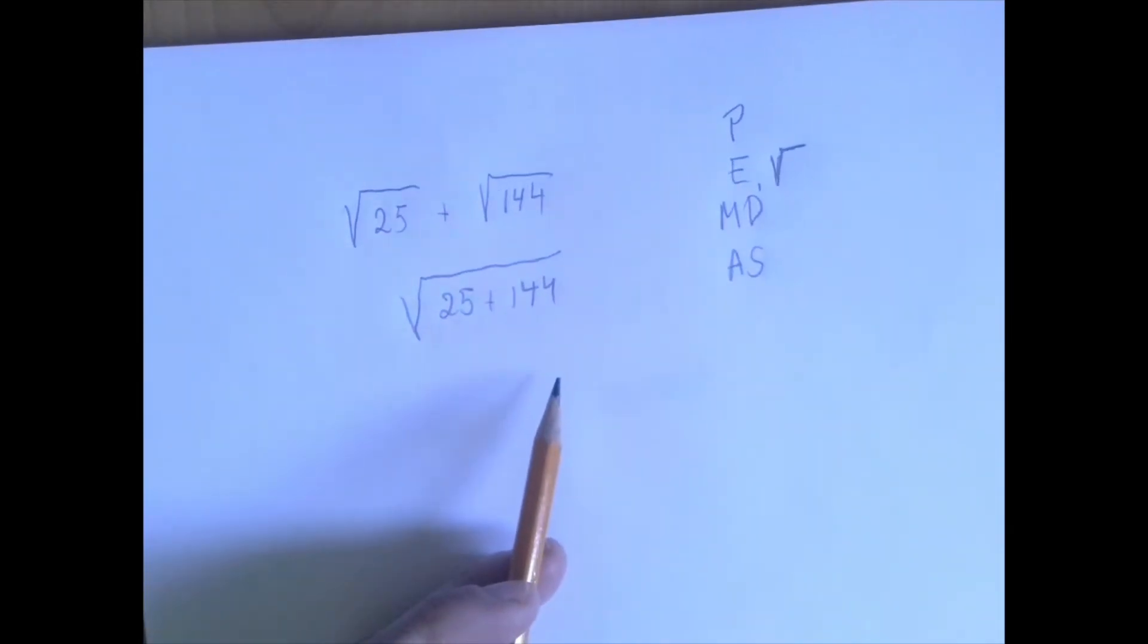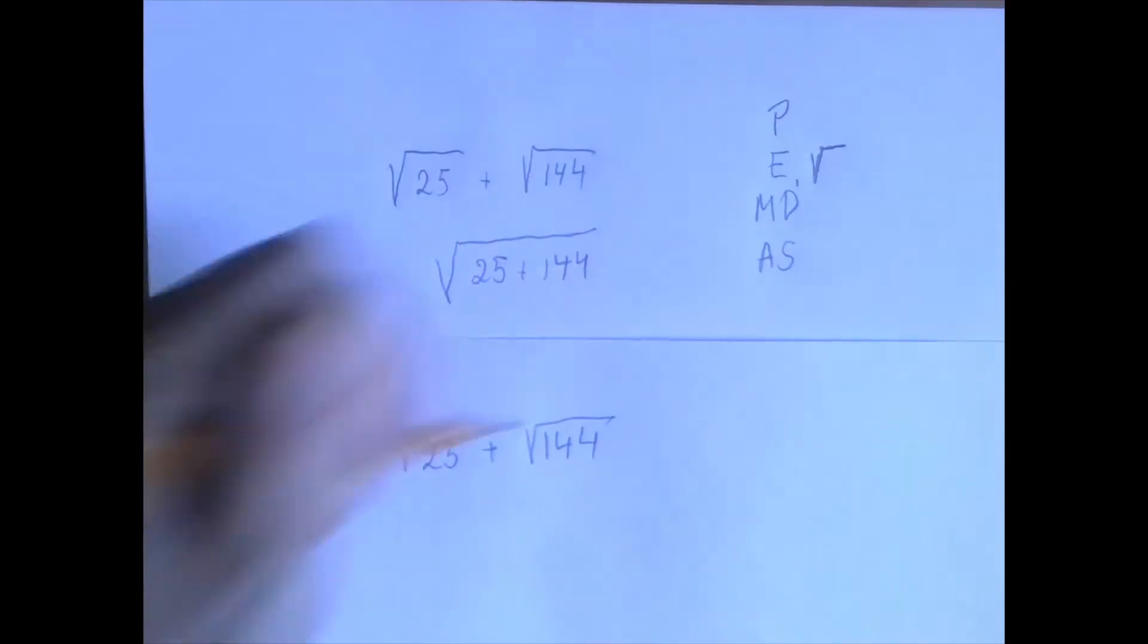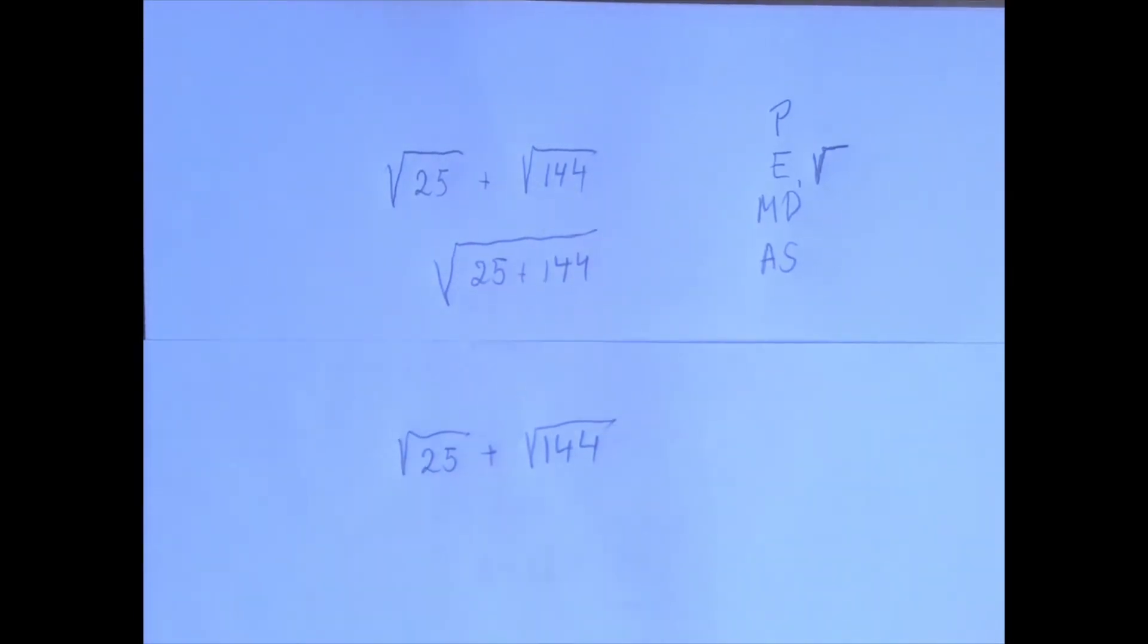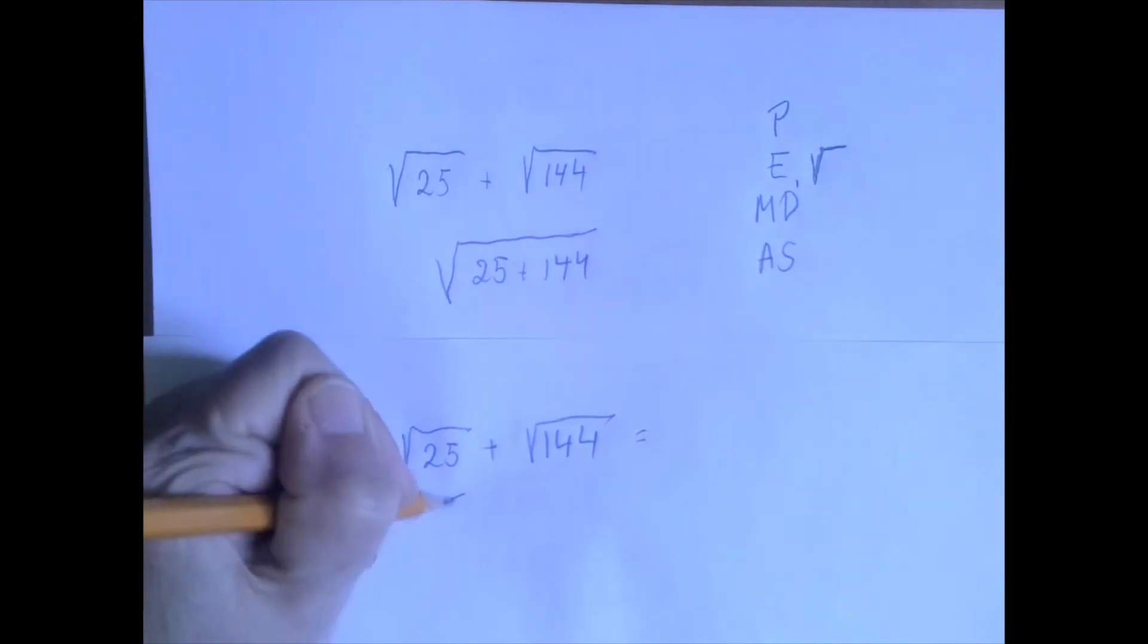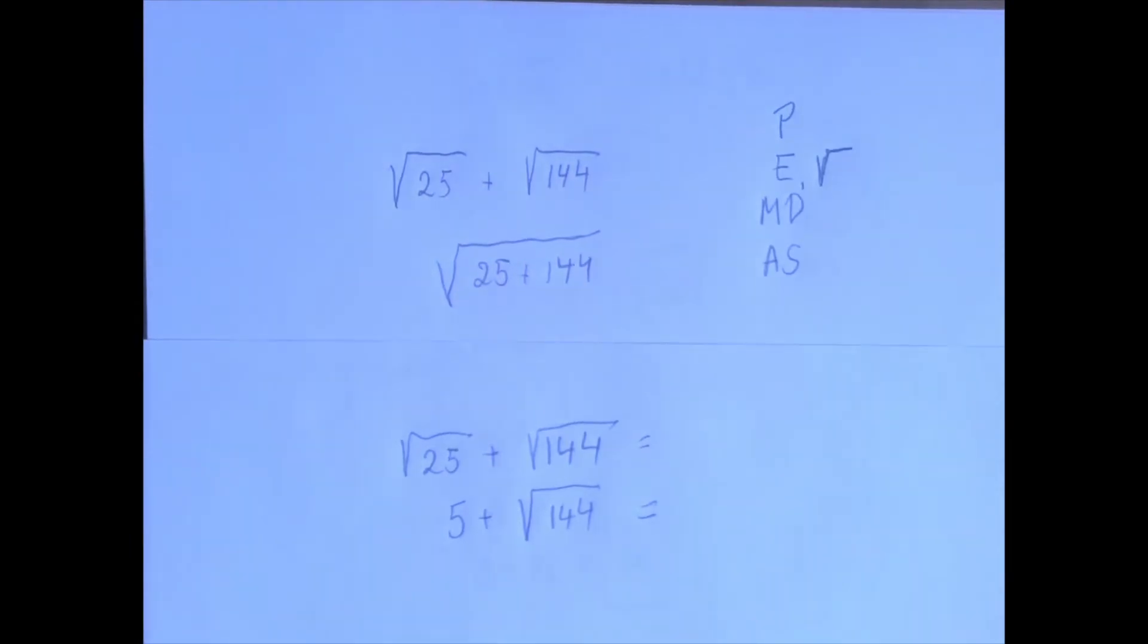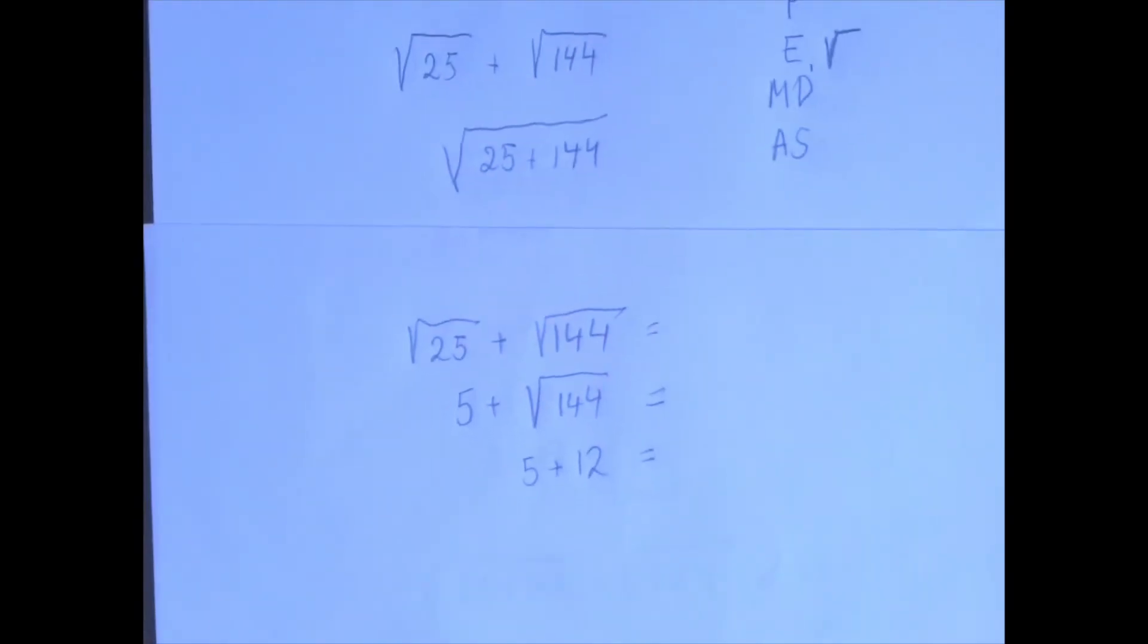We have three operations: square root, addition, square root. So according to our new order of operations agreement, square roots come first left to right. Square root of 25 is 5. Square root of 144 is 12, and 5 plus 12 is 17.